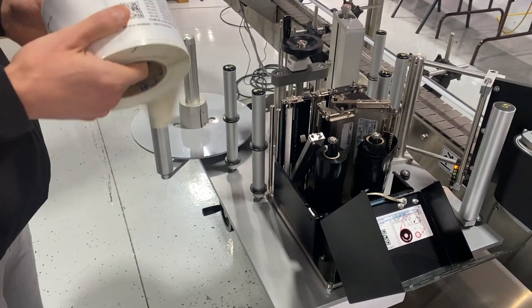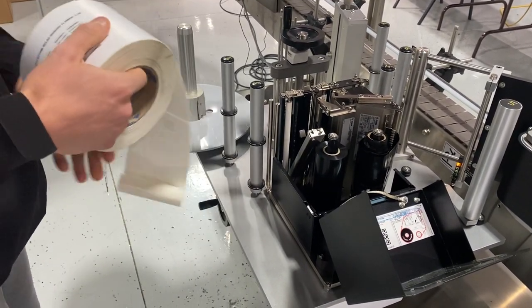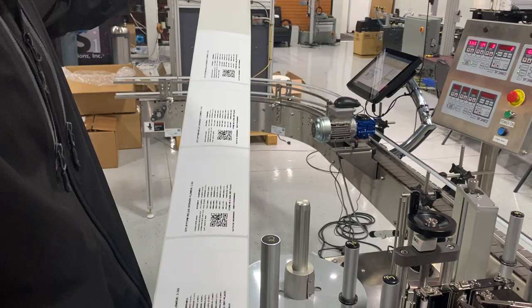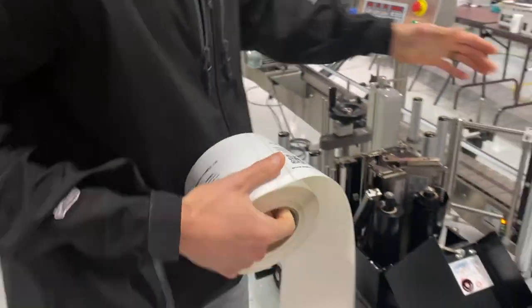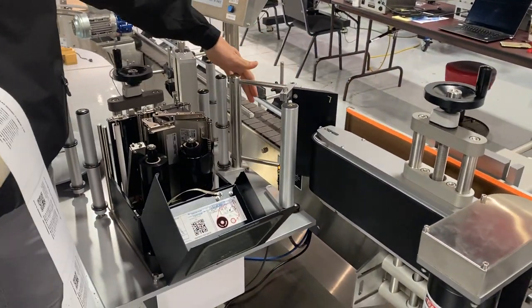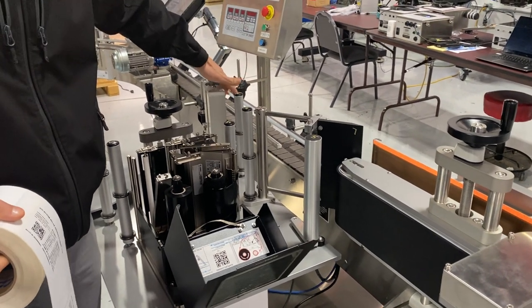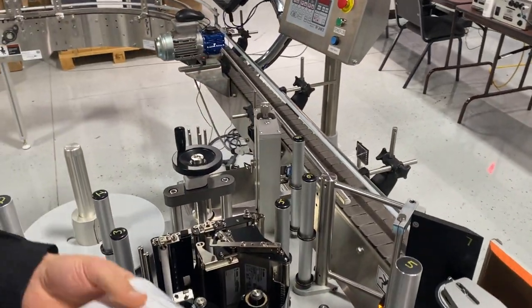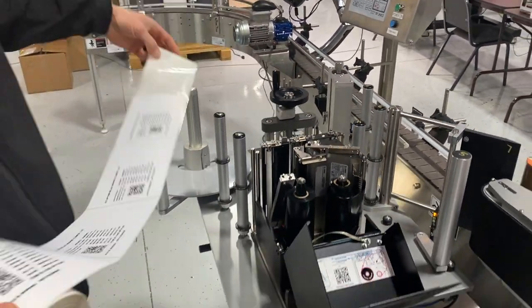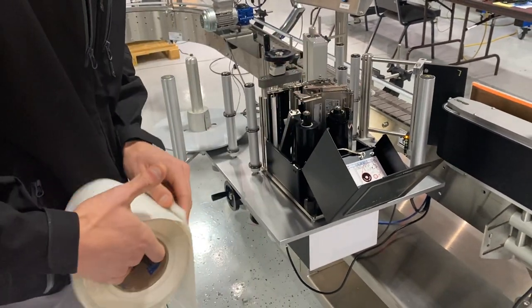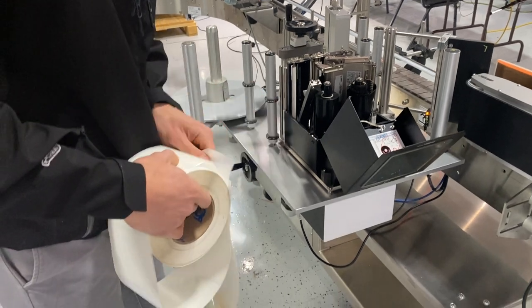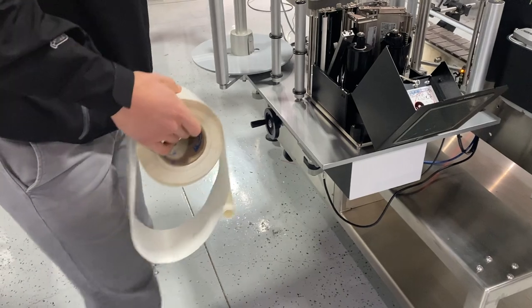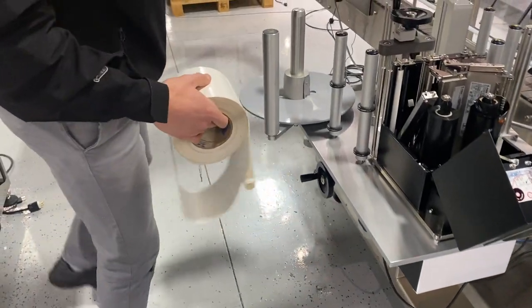Now, whenever I'm winding up or webbing up the label applicator, I always want to remove the first, let's call it five or six labels from the liner. The reason for that is past the peel plate, I don't want to have any labels because if it gets jammed up in this pinch and peel roller or on the waste take-up roller, it's just going to create a mess and you're going to have to clean off adhesive and it's just not fun. So I'll remove the first five or six labels.